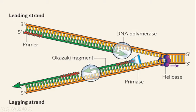Okazaki fragment length in eukaryotic cells is 100–200 nucleotides, and in prokaryotic cells it is 1000–2000 nucleotides. This discontinuously synthesized strand made of small fragments is called the lagging strand. Each fragment starts with a primer.